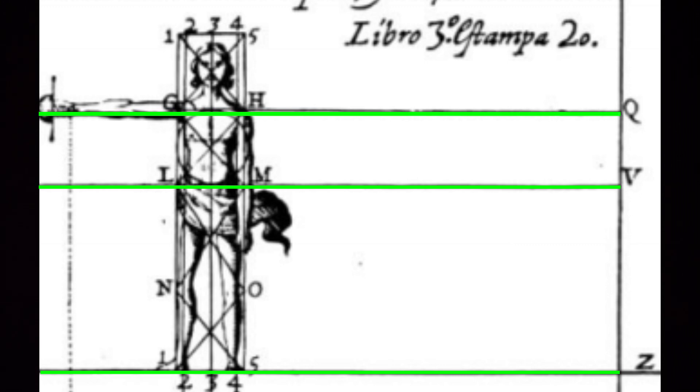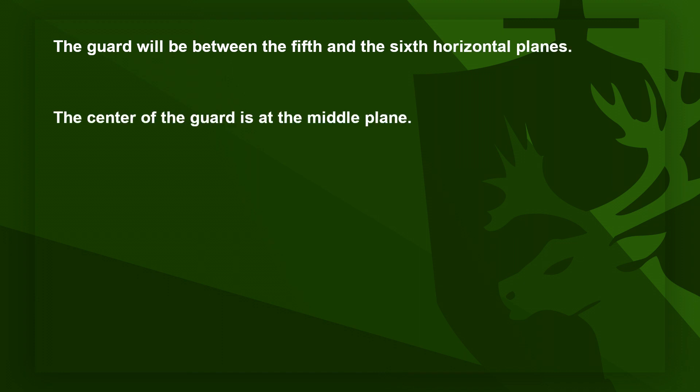Through his book, he uses both named planes and numbered planes when referencing the height of something, for example saying, the guard will be between the fifth and sixth horizontal plane, or the center of the guard is at the middle plane.